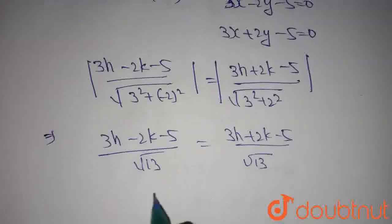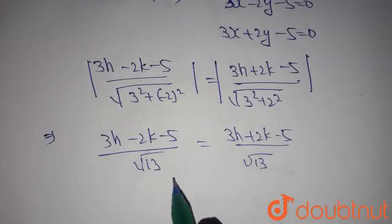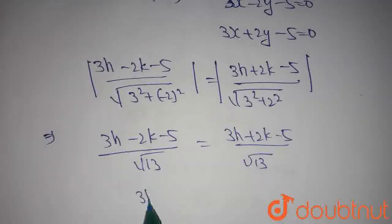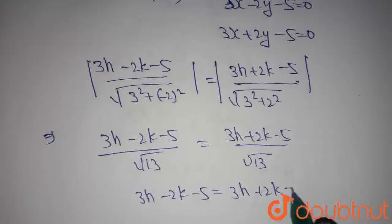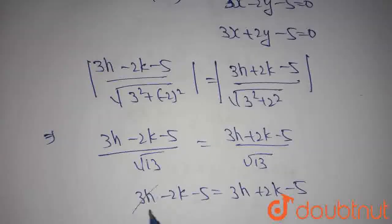√13 cancels out on both sides. Then we get 3h-2k-5 = 3h+2k-5. 3h cancels out each other, and -5 cancels out each other.